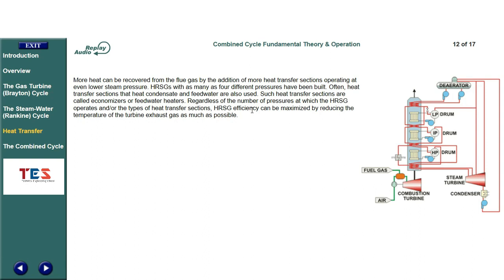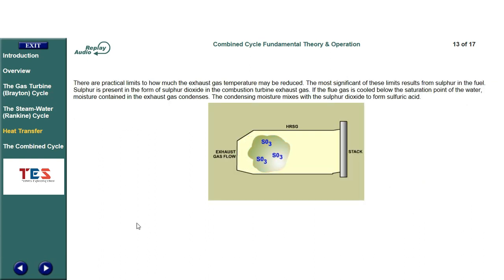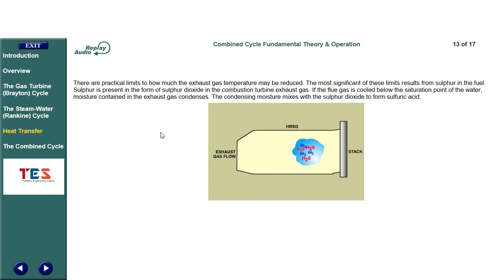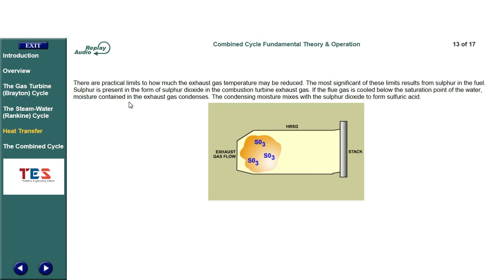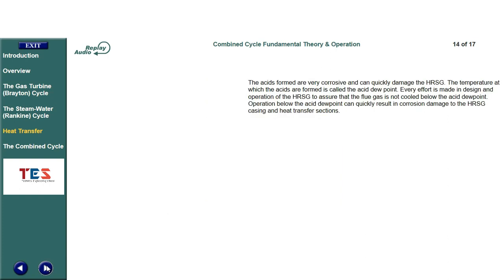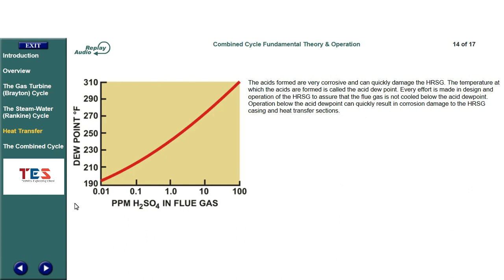Regardless of the number of pressures at which the HRSG operates or the types of heat transfer sections, HRSG efficiency can be maximized by reducing the temperature of the turbine exhaust gas as much as possible. There are practical limits to how much the exhaust gas temperature may be reduced. The most significant of these limits results from sulfur in the fuel, which is present as sulfur dioxide in the combustion turbine exhaust gas. If the flue gas is cooled below the saturation point of the water, moisture contained in the exhaust gas condenses, and the condensing moisture mixes with the sulfur dioxide to form sulfuric acid. The acids formed are very corrosive and can quickly damage the HRSG.